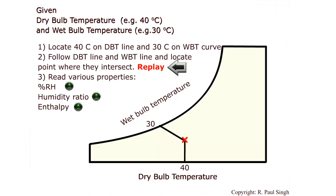Let's say that we know the dry bulb temperature and wet bulb temperature and we want to locate a point on the psychrometric chart to determine all the remaining properties. In this example, the dry bulb temperature is 40 degrees C and wet bulb temperature is 30 degrees C. We locate the vertical dry bulb temperature line and the inclined wet bulb temperature line and see where those two lines meet.